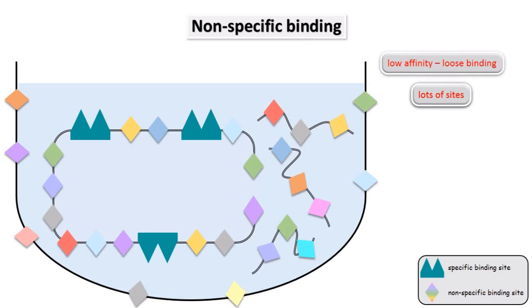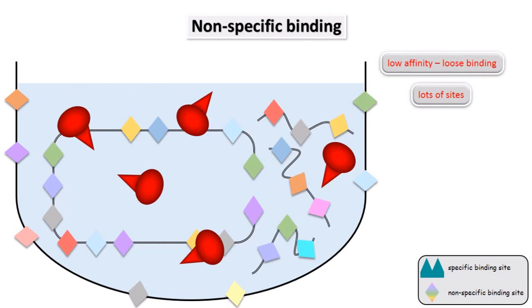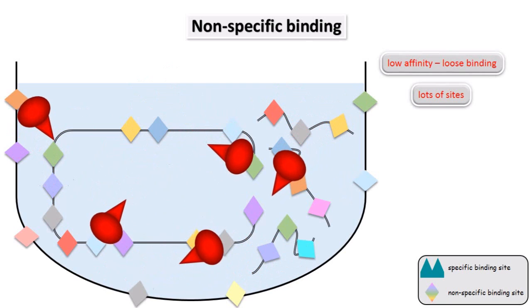To make things clearer, I'm now going to remove the receptor sites from the diagram. Now we will add the hot ligand again. The ligand molecules move around and interact with non-specific sites as they encounter them, just in the same way as they interact with the specific sites, but this time they bind much more loosely.